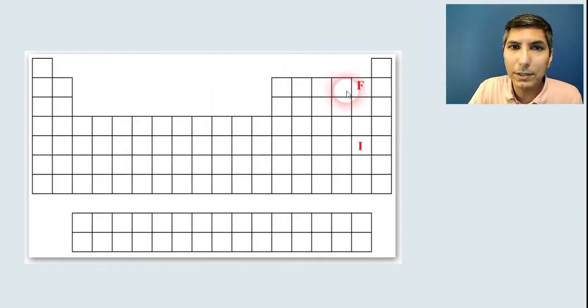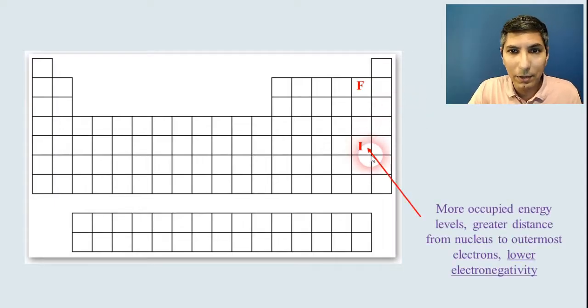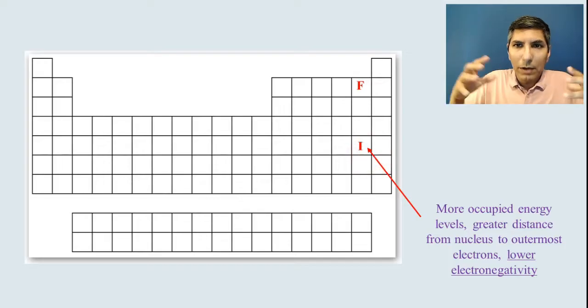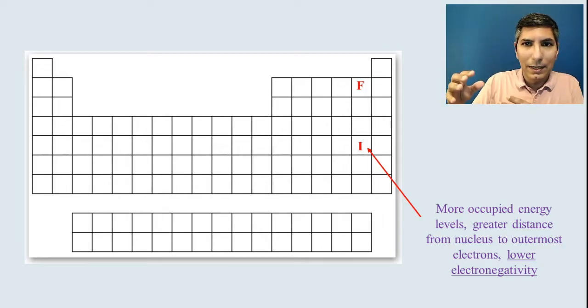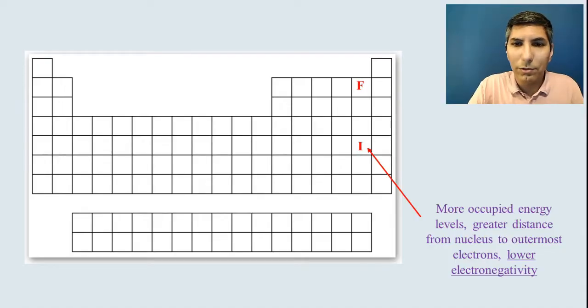So let's compare these two, fluorine and iodine. Well, remember, when we're talking about up and down, we need to be thinking about this in terms of the distance from the electrons to the nucleus. Here in iodine, we have more occupied energy levels, which means we have a greater distance from the nucleus to those outermost electrons, which means it can't attract in those electrons from farther away. So a lower electronegativity.